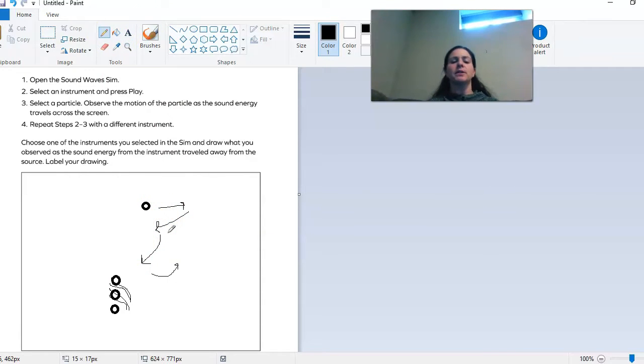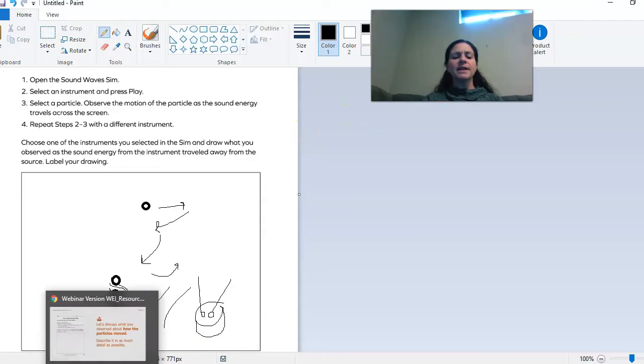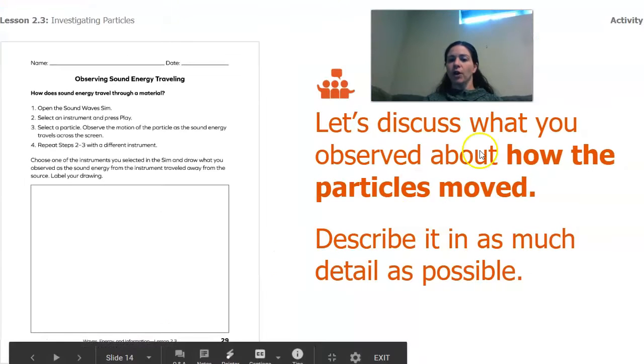So again, at first my particle was just kind of moving around, it looked like it was colliding into some other pieces and changing directions. And then again, once that drum—you're going to see my awesome drumsticks—once that drum was played, I saw my particle jump in a line with other particles. Maybe you saw something similar, maybe you saw something different. So go ahead and take a second to do a little bit of your drawing.